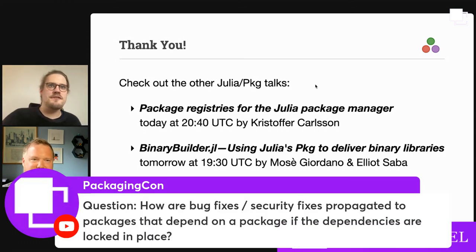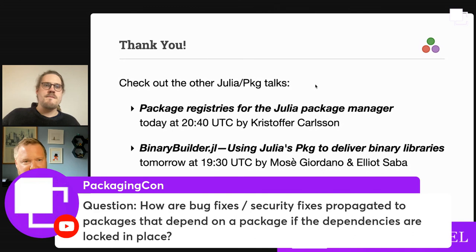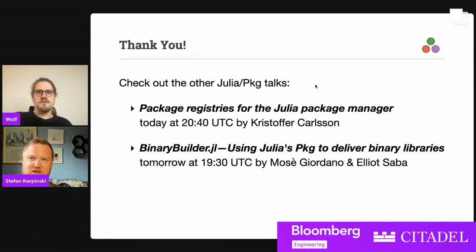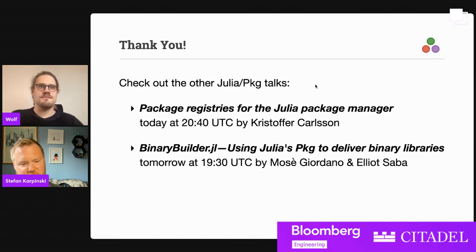There's another question: how are bug fixes and security fixes propagated to packages that depend on a package if the dependencies are locked in place? It works the same way as any other system with lock files — the lock file tells you what you did run; it doesn't tell you what you have to run. We have a mechanism for yanking versions that are insecure. There's not really a good way to deliver that messaging to the end user, but if you do updates you won't get the bad version. In hosted solutions like JuliaHub — a hosted cloud computing solution — you can actually get proactive alerts about security issues, but we can't really do that on end systems since you have to talk to some server before you can be notified.